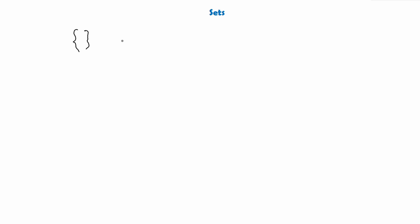Now what if we have a set that has no elements? We call this the empty set because there are no elements in it, so the set is empty. We give the empty set a symbol that looks like a circle with a line through it, and we call this symbol the empty set.